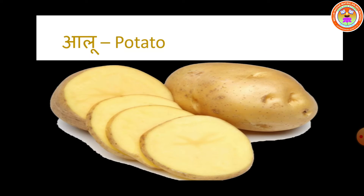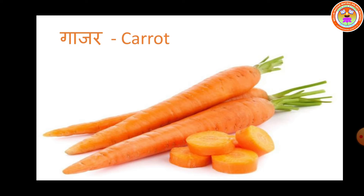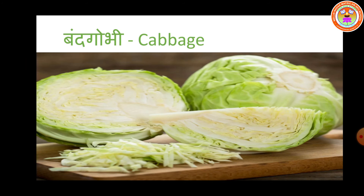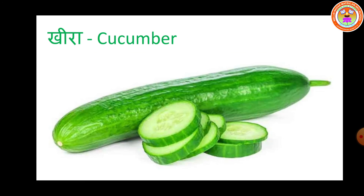Aloo — potato. Gajar — carrot. Mooli — radish. Bandh gobi — cabbage. Keera — cucumber.